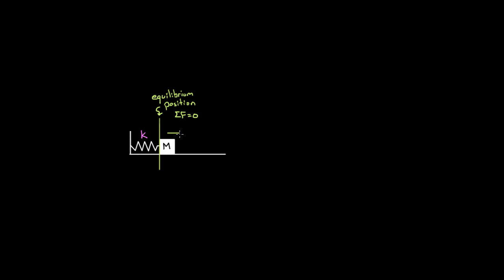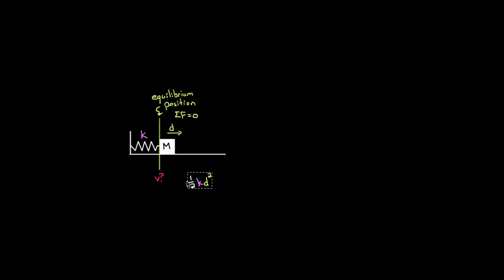So let's say we pull the mass to the right a distance d. If we do this, we give the spring potential energy. And if we release the mass from rest while the spring has potential energy, the spring's gonna pull the mass back to the left. The potential energy the spring starts with is one half k — the spring constant — times d, the amount the spring's been stretched, squared.